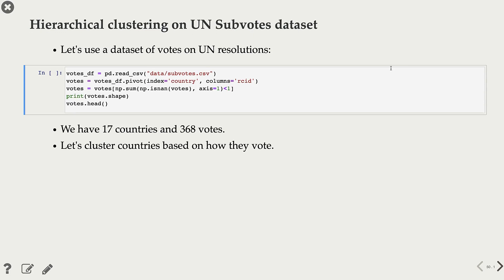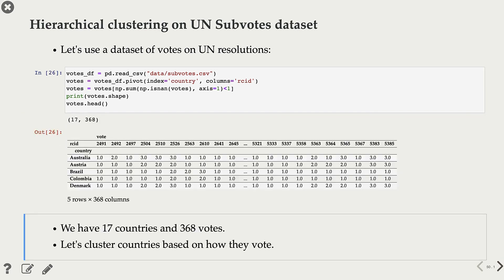Let's apply hierarchical clustering on UN subvotes data set. This is our data set, and what we have in this data set is we have 17 different countries, and we have votes of these 17 countries on different UN resolutions. So we have 17 countries, 17 rows, and 368 votes, so 368 columns.